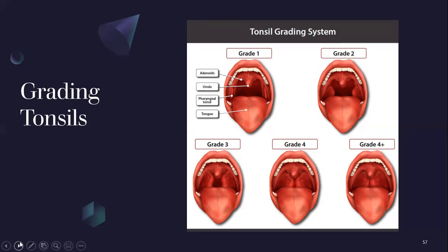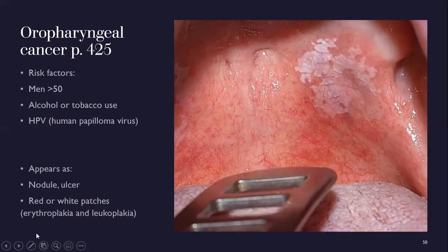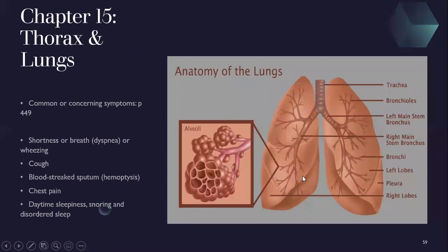Oropharyngeal cancer risk factors: men older than 50, alcohol or tobacco use, and HPV. It can appear as a nodule, ulcer, or red or white patches — erythroplakia or leukoplakia. Moving on to thorax and lungs: the right lung has three lobes and the left has two. The alveoli are the microscopic air sacs at the bottom. Concerning symptoms: shortness of breath, dyspnea, cough, hemoptysis, chest pain, and daytime sleepiness with snoring, which can indicate sleep apnea.